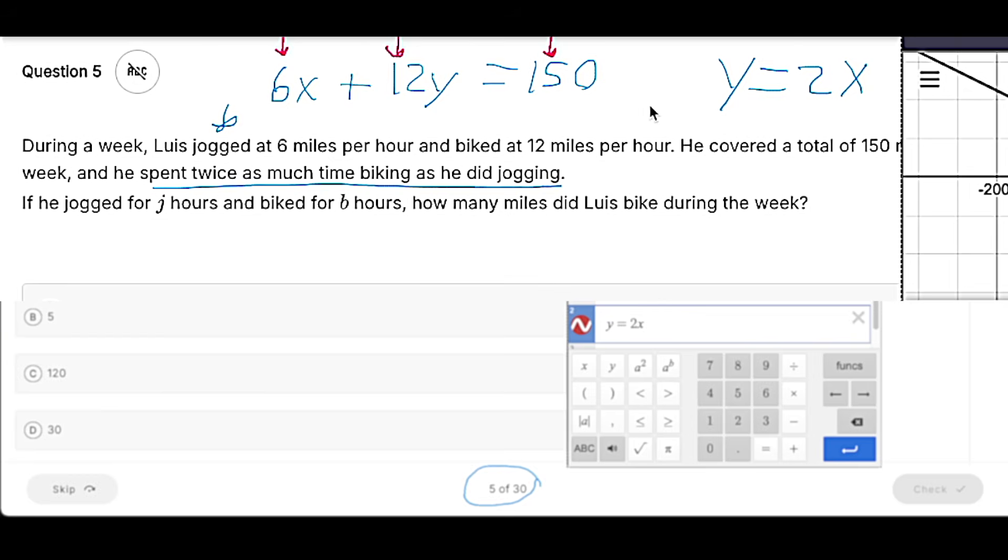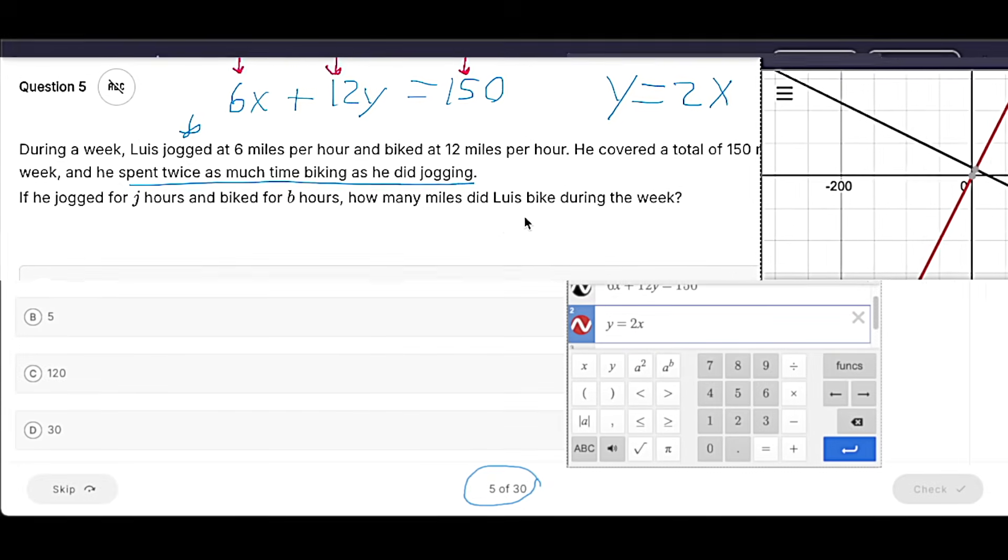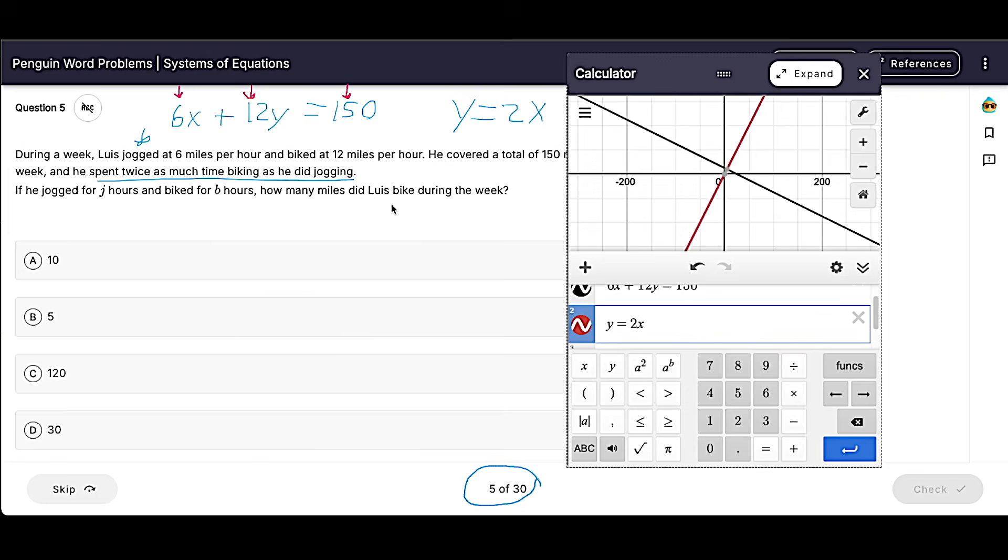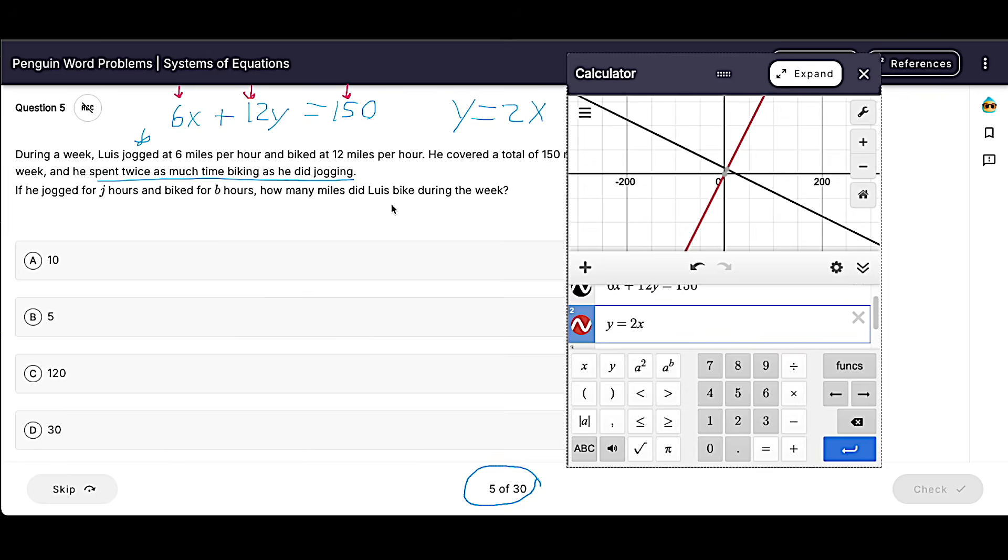What was that value? That value was the number of miles. So X and Y don't represent the number of miles that Luis jogged or biked. X and Y represent the number of hours that Luis jogged or biked.